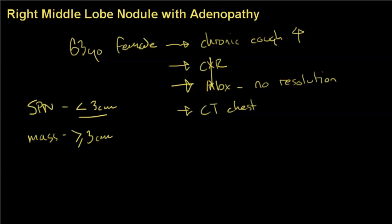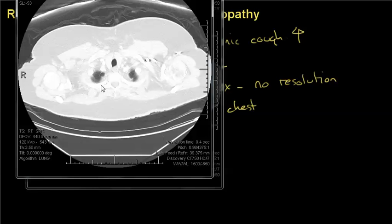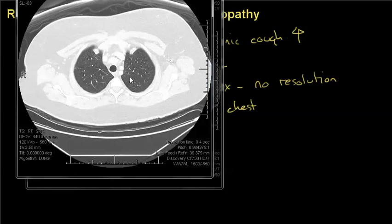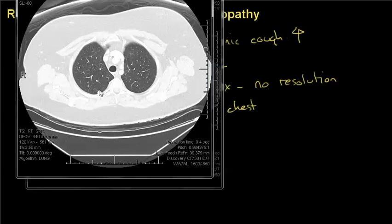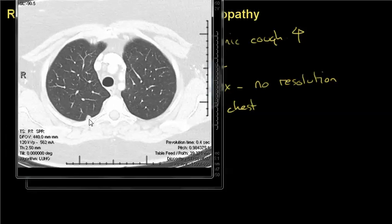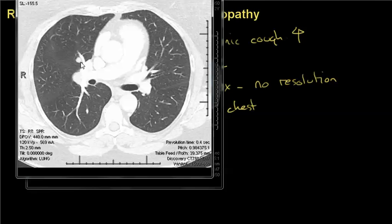On the CT chest, as we scroll down you can see there's a little nodule here. As we come down further, you can start seeing the fissure. Down here is the superior segment, this is the upper lobe. There's another nodule right in the minor fissure.